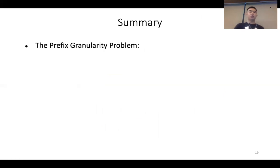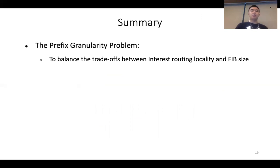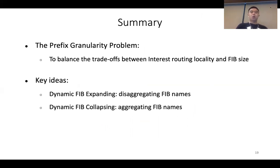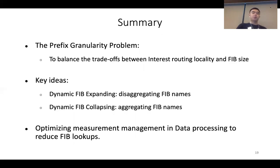In summary, we define the prefix granularity problem, which is key to balancing the trade-off between interest routing locality and FIB size. The key ideas of this paper are dynamic FIB expanding — to disaggregate FIB names — dynamic FIB collapsing — to aggregate FIB names — and optimized measurement management in data processing to reduce FIB lookups. Thank you for listening.